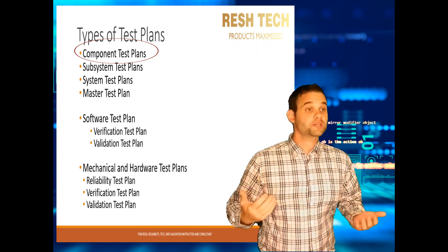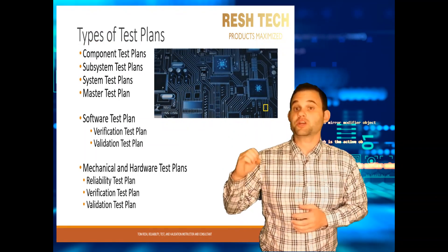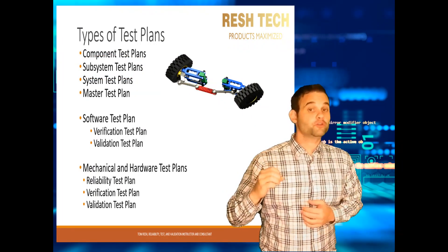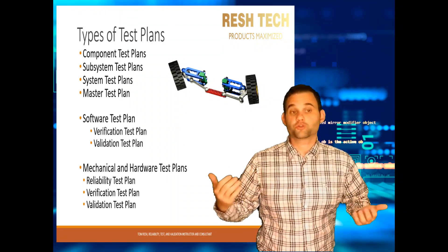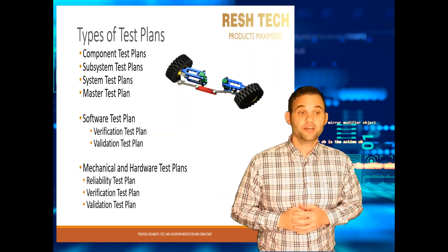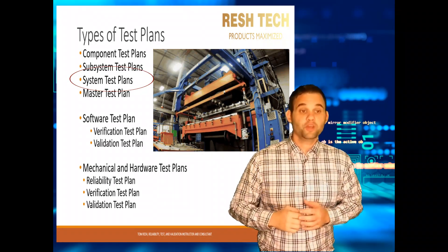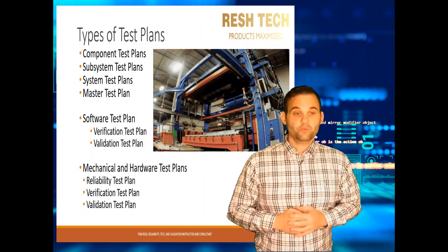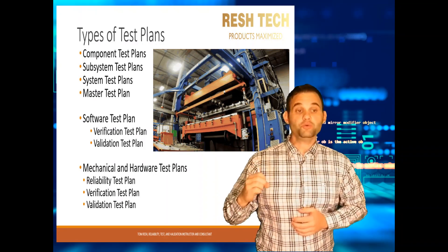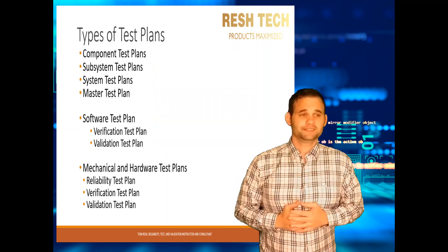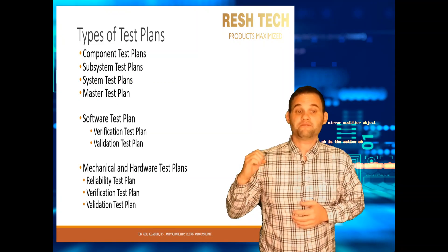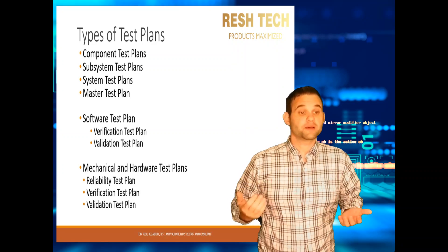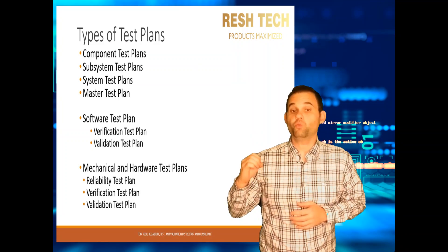You have the component test plan, which is the plan for individual components that are integrated to make subsystems. You have the subsystem test plan, which are the integrated parts assembled together to create your system or product. Then you have your system test plan, which is when you take everything, fully integrate it, and test it — a representation of what you would sell to a customer. You also have the master test plan, which is an effective consolidated plan that captures your component, subsystem, and system level testing in one document.